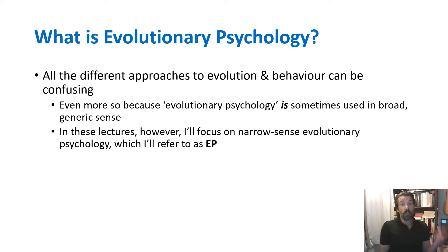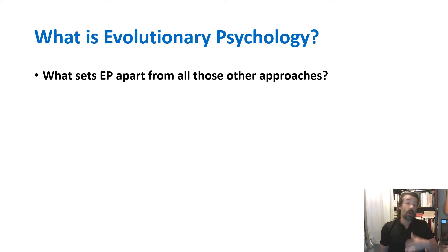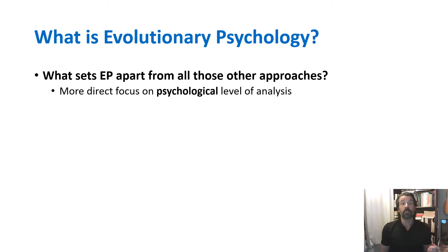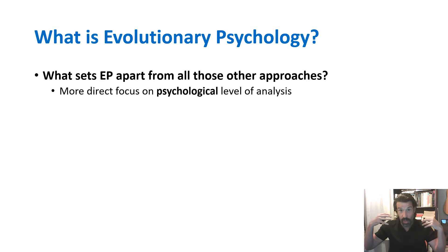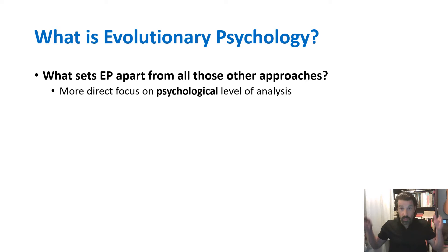I'll be referring in a narrow sense to evolutionary psychology, and I'll just refer to it as EP. What sets EP apart from all those other approaches? More than these other approaches, EP tends to focus directly on the psychological level of analysis. Some other approaches, like sociobiology and behavioral ecology, focus more on outward observable behavior as opposed to the inner workings of the mind and brain — the psychological aspects of behavior. Other approaches, like cultural evolution and gene-culture co-evolution, focus more on cultural behavior and behavior at the level of the cultural group, as opposed to directly on the psychological mechanism.